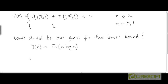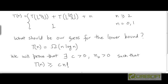So, we will prove by mathematical induction. We will prove or try to prove that there exists a constant c greater than 0 and a threshold n0 greater than 0, such that T of n is bounded from below by a constant multiple of n log n, for all values of n larger than the threshold.